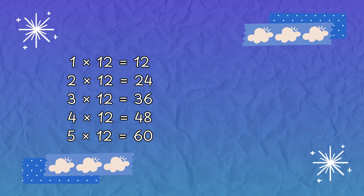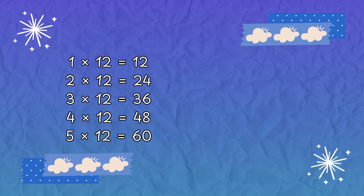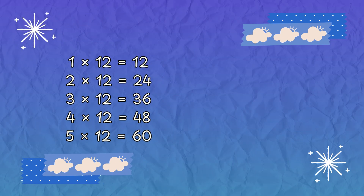One times twelve is twelve, two times twelve is twenty-four, three times twelve is thirty-six, four times twelve is forty-eight.